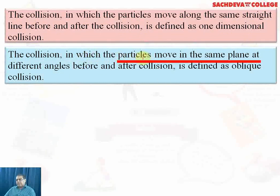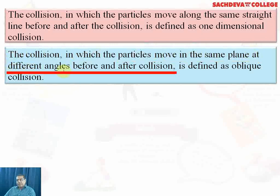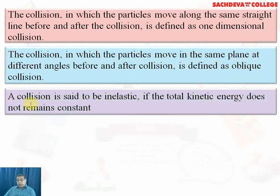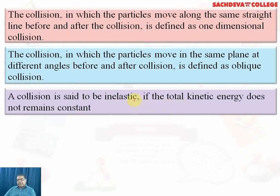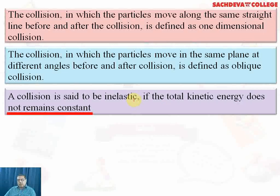A collision in which the particles move in the same plane but at different angles before and after collision is called an oblique collision. A collision is said to be inelastic if the total kinetic energy does not remain constant — that is, there is a loss in kinetic energy.